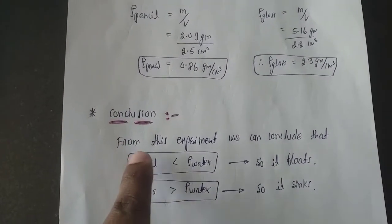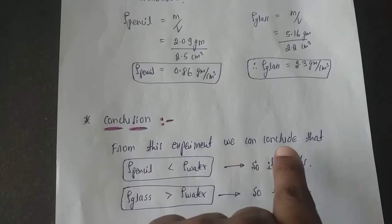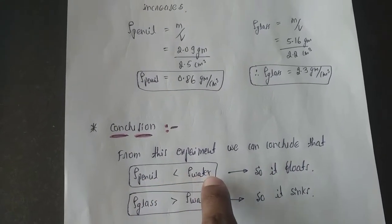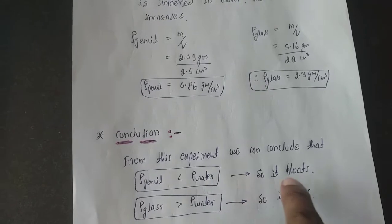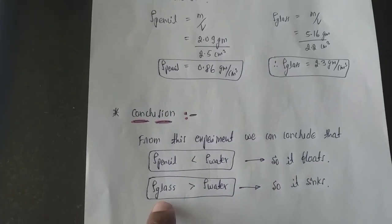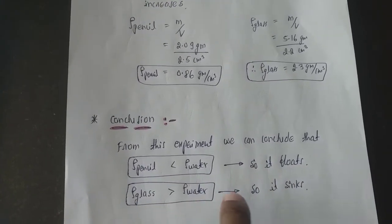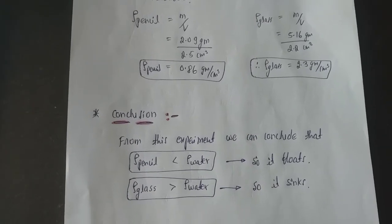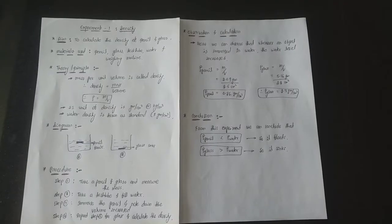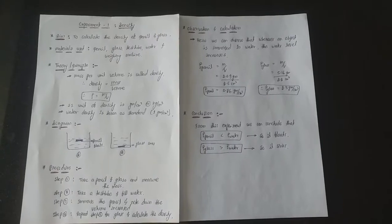So in conclusion, from this experiment we can conclude that density of pencil is less than water, so the pencil floats, and density of glass is more than water, so the glass sinks. You can pause the video and note down this.